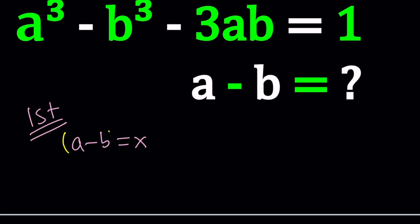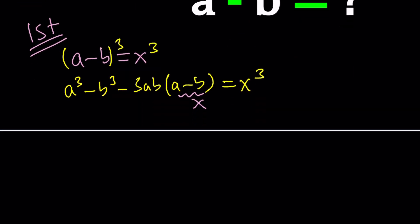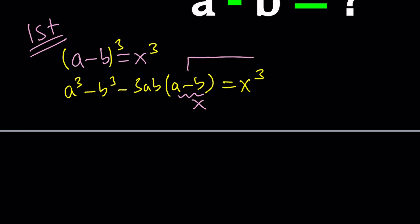Now, cube both sides. That gives us the following. I usually write a different version of this: a³ - b³ - 3ab(a - b), which is very helpful most of the time. This equals x³. One thing that I want you to notice is that a - b is x, so this is also x. What does that mean? It means that if you rearrange, this is what we're going to get: x³ + 3abx = a³ - b³.